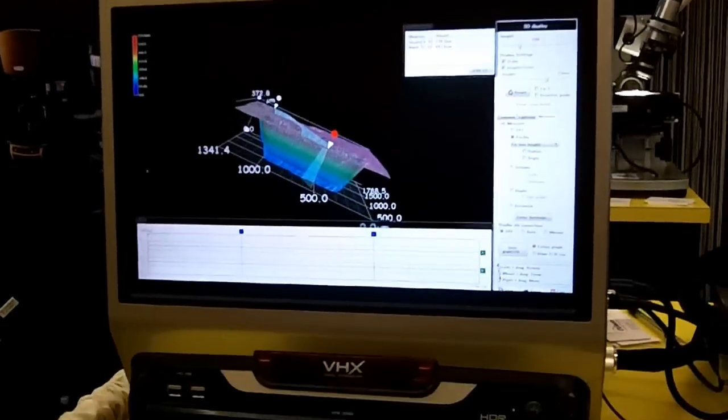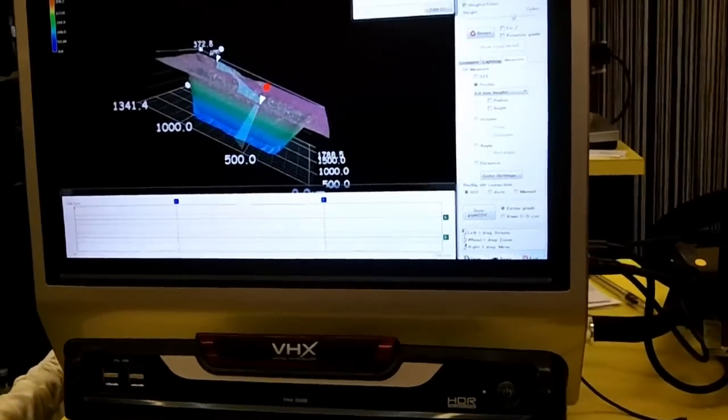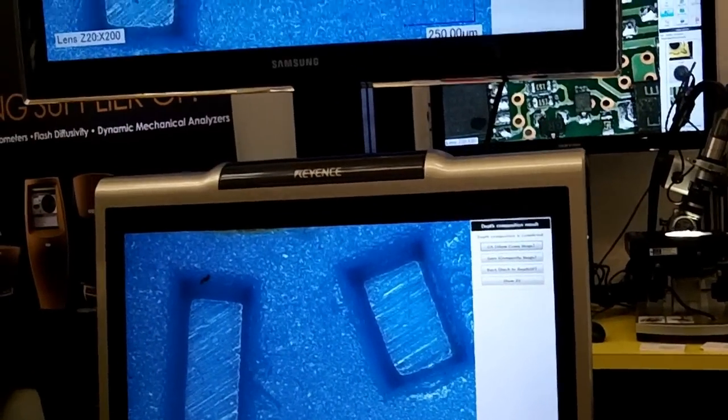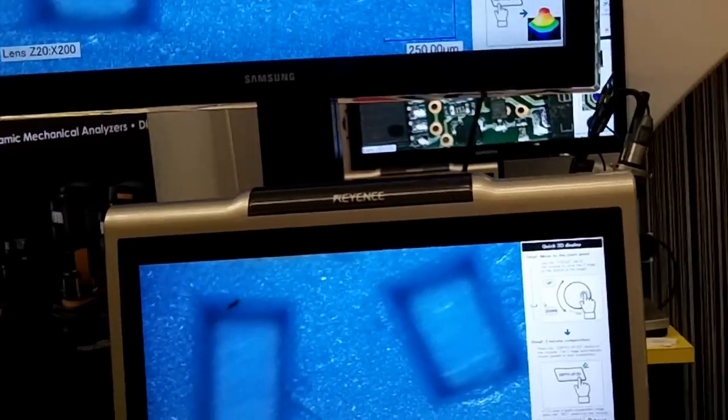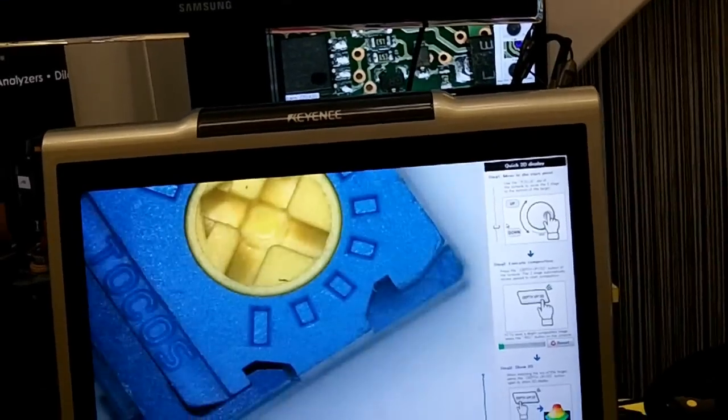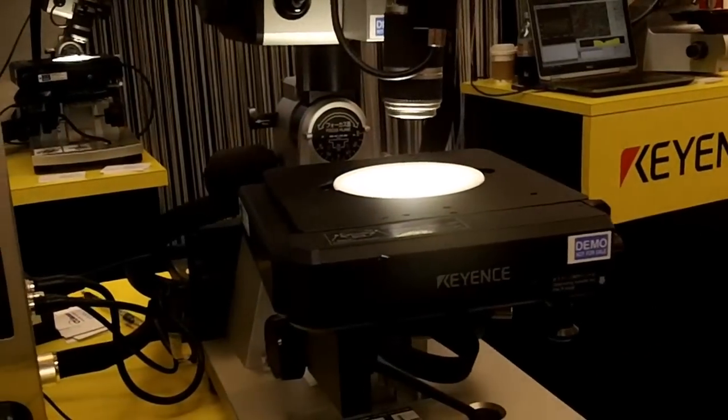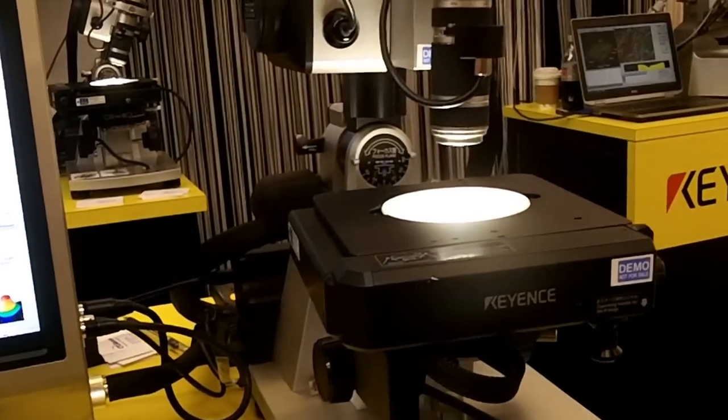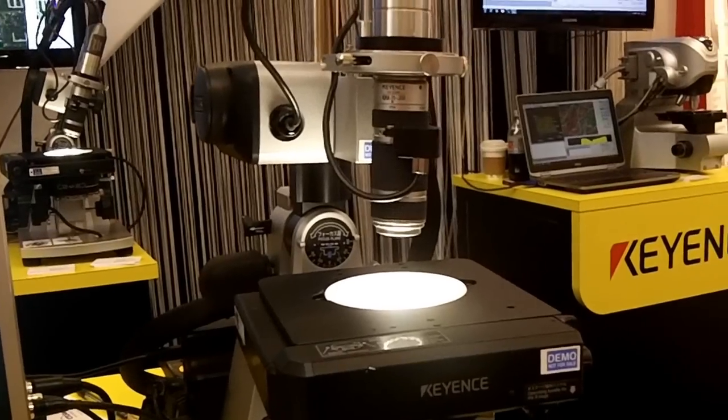So the system that we're looking at here is our VHX 2000 digital microscope. I'll show you some of the capabilities. It functions just like a conventional microscope would, but this is a digital style system so there are no eyepieces with this microscope. Everything we look at is going to be directly on screen.